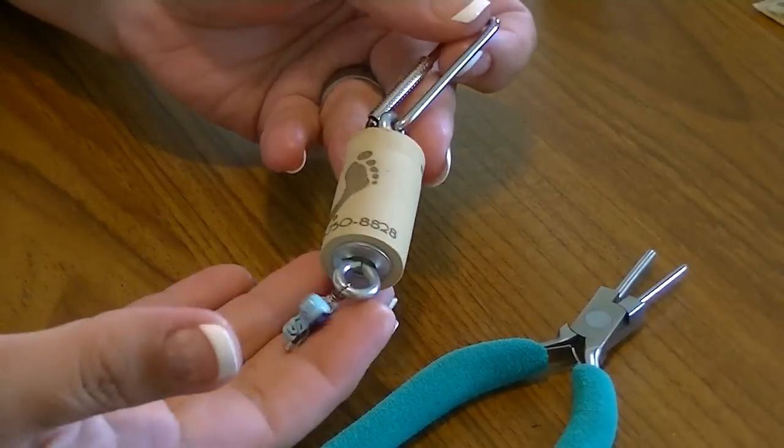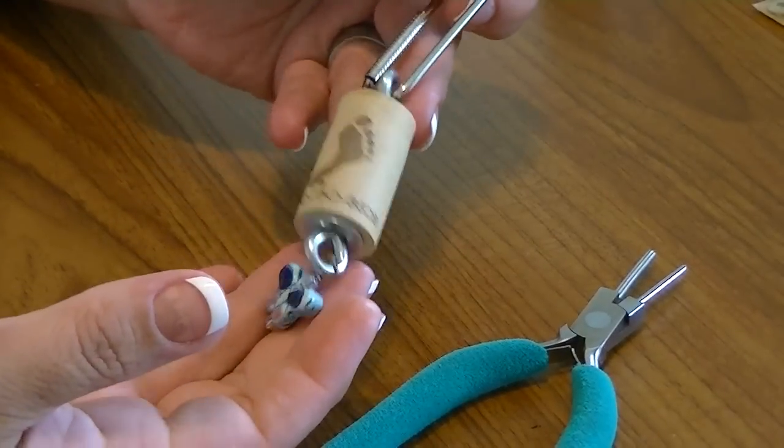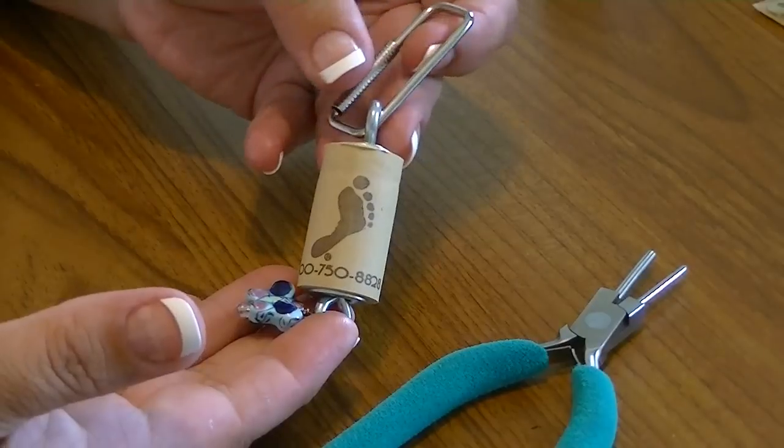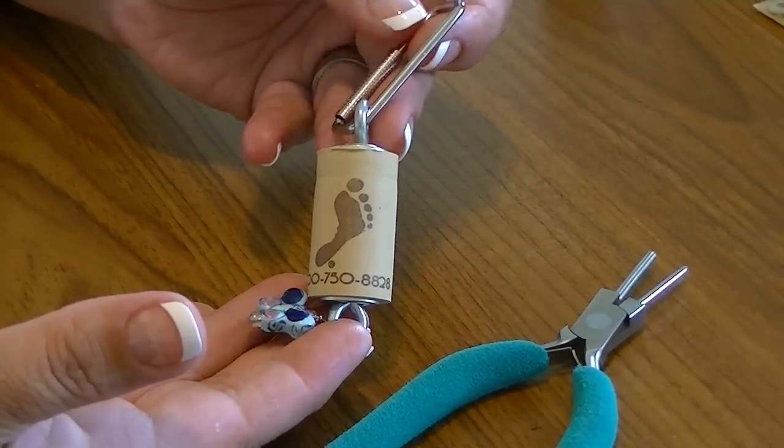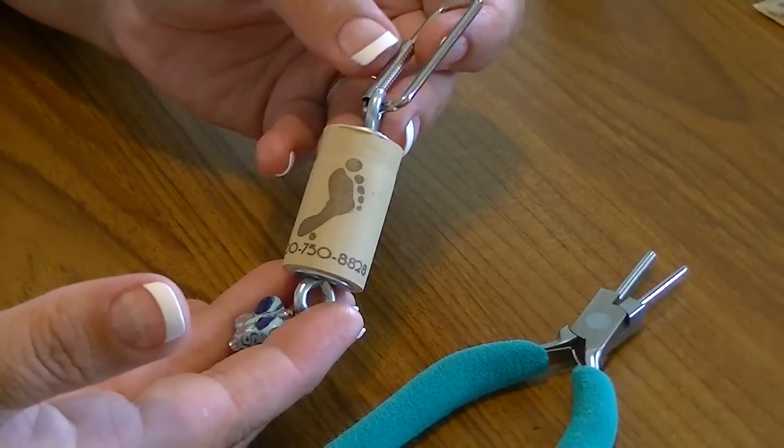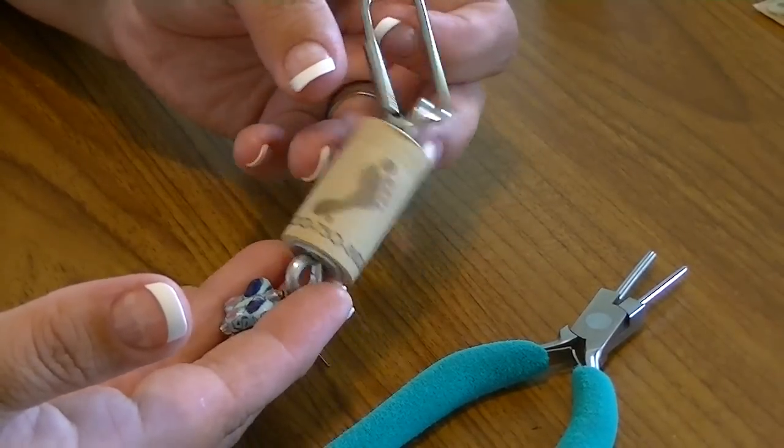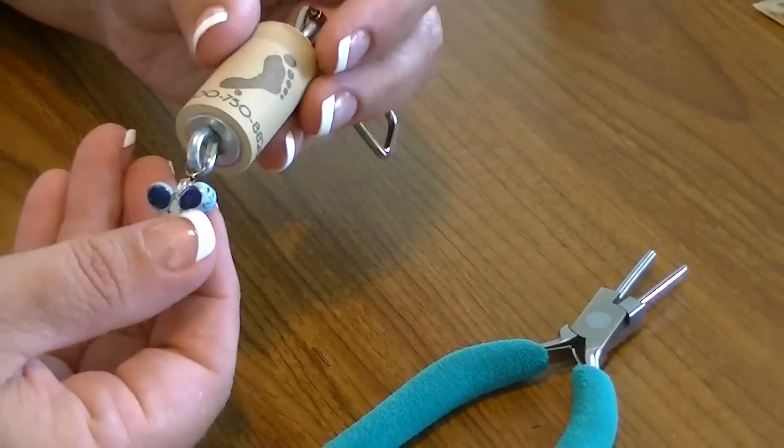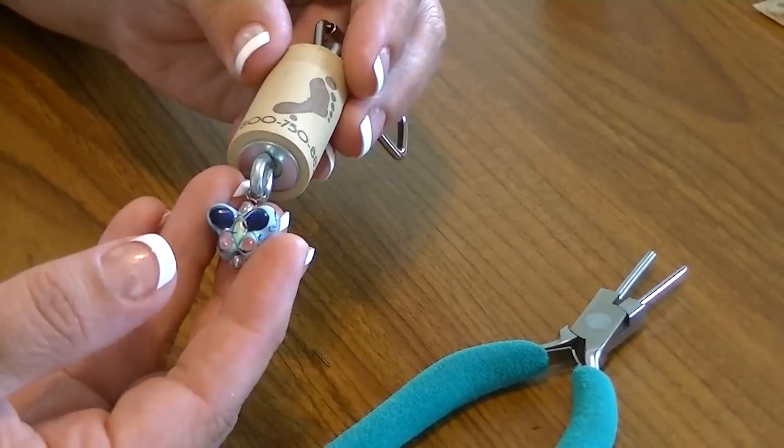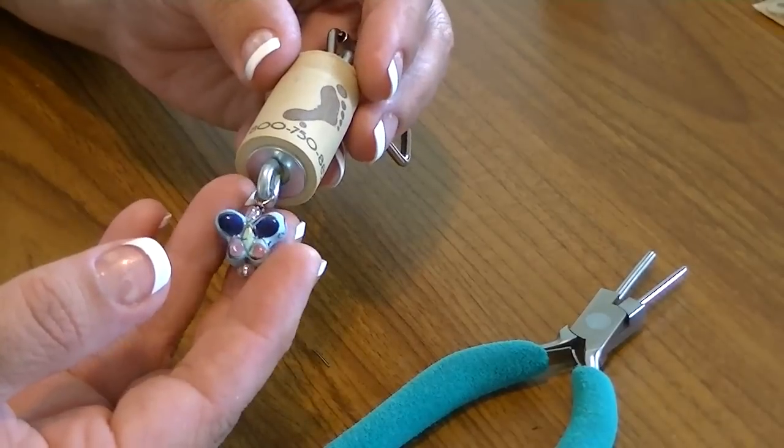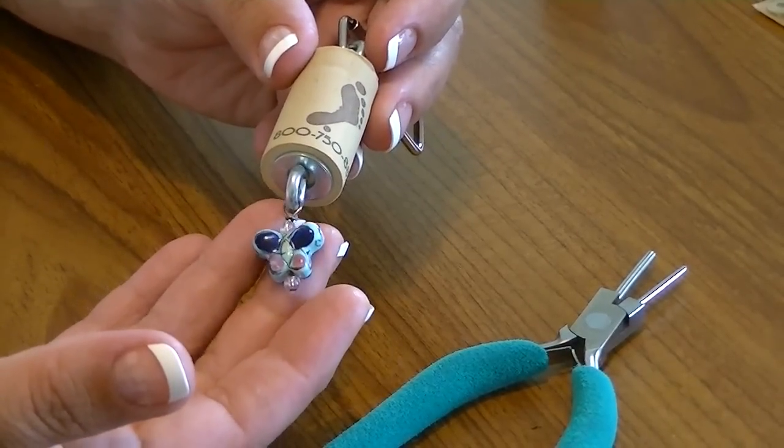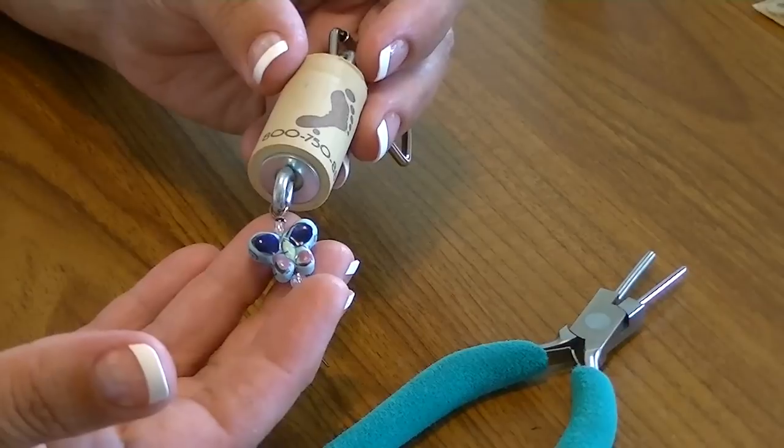There is your completed wine cork key chain. All of your keys will fit nicely and even all those grocery store cards that you have to carry with you everywhere will also fit on there. It has a little personalized charm which is great if you're doing these as gifts, say at Christmas time. They could all look the same except everyone has a special charm, something that means something special to each person.